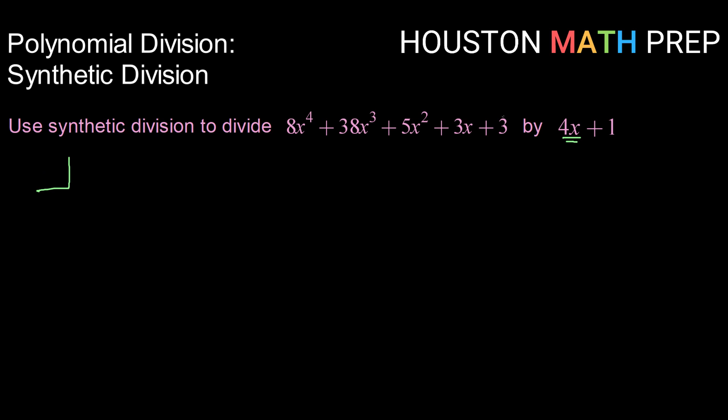We know that in our box here we always take what the zero would be if our divisor was a factor. If 4x plus 1 was set equal to 0, we get x equals negative 1 fourth by subtracting over that 1 and dividing by 4. That's what we're going to have in our box. We're going to bring each of our coefficients over just like normal: 8 for x to the 4th, 38 for x cubed, 5 for x squared, 3 for x, and 3 as our constant.